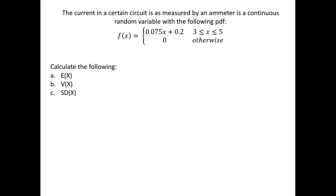Suppose the current in a certain circuit as measured by an amateur is a continuous random variable with the following PDF: 0.075x plus 0.2, where x is from 3 to 5. First we want to calculate the expectation, then the variance, and then the standard deviation of x.